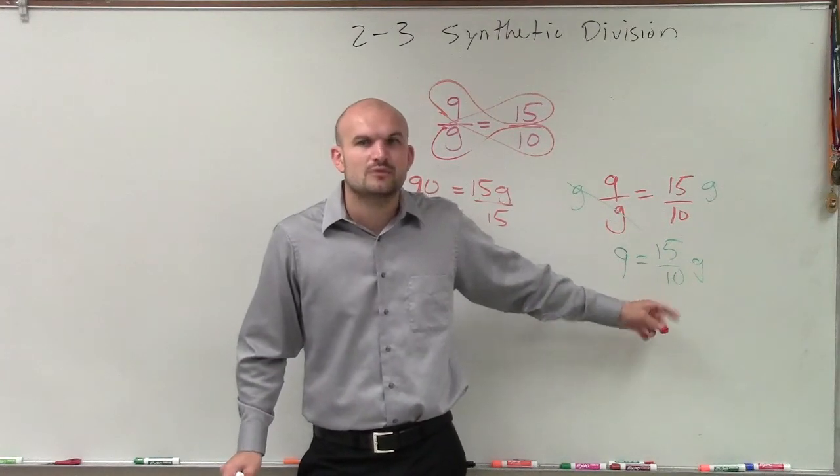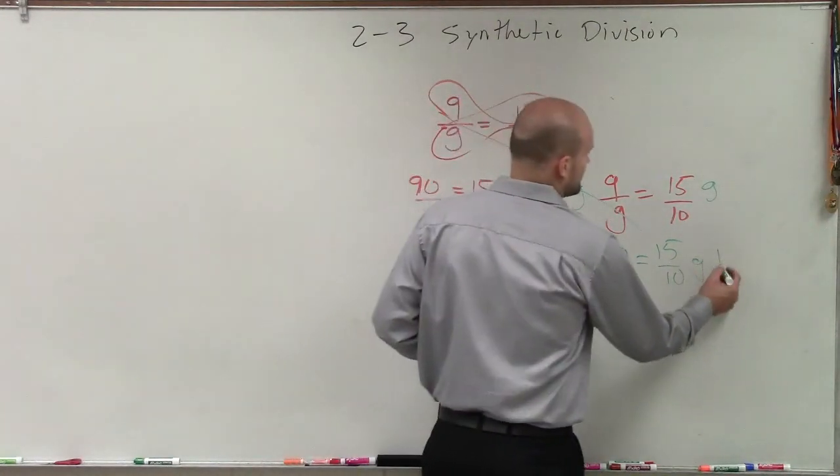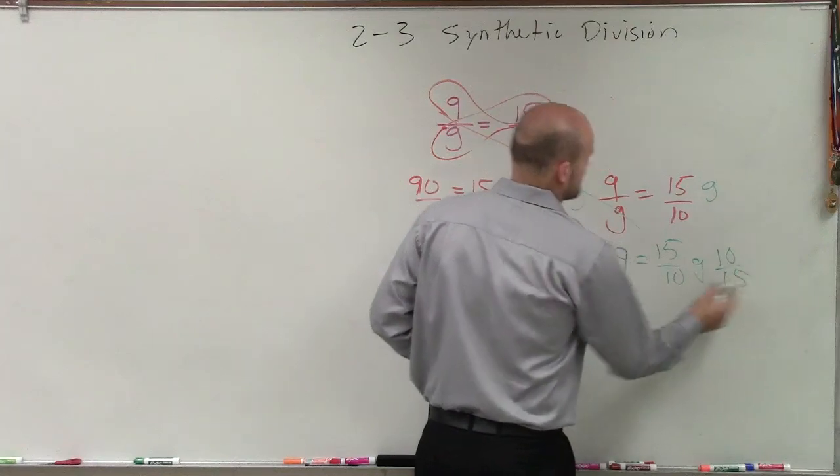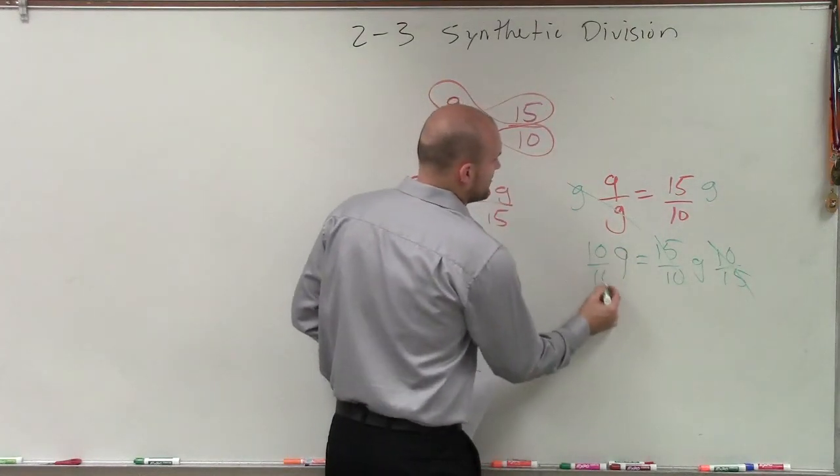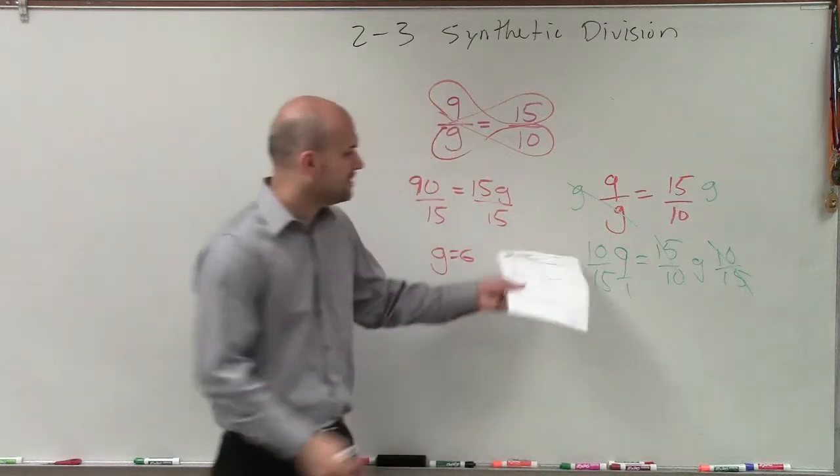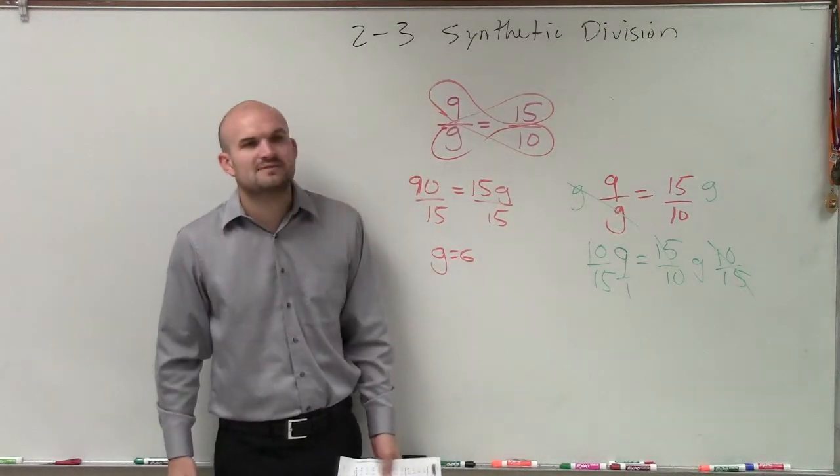We had to multiply by the reciprocal. So you can just multiply by the circle, 10 fifteenths, those multiply to 1, 10 fifteenths over 1. So therefore, now you have to do 10 fifteenths times 9 over 1.